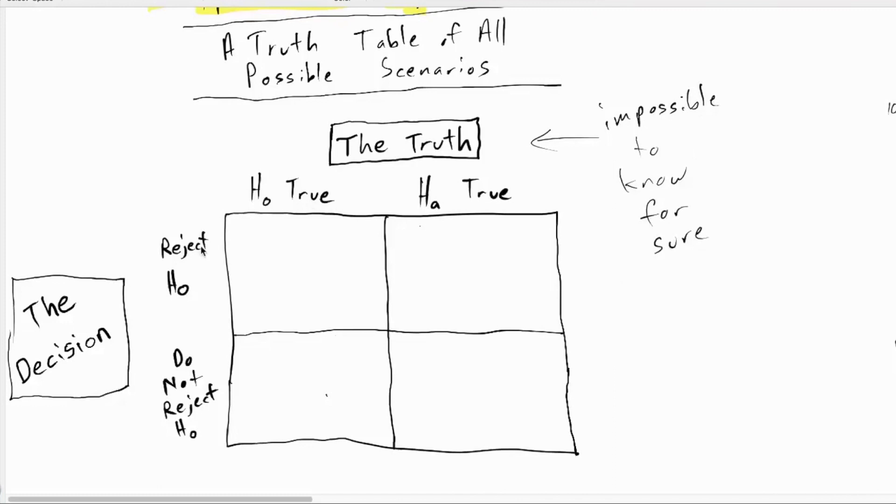We do our best to do some science to figure out what's going on. So we do a hypothesis test and that hypothesis test ends up with a decision, which is one of either two things. Either you reject the null or you do not reject the null. There's four different scenarios that can happen when you're doing a hypothesis test.